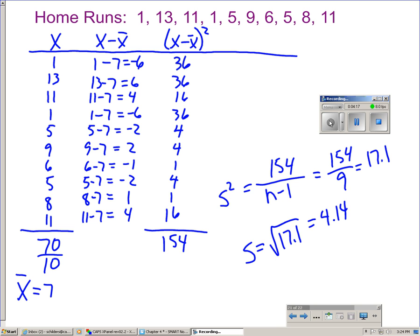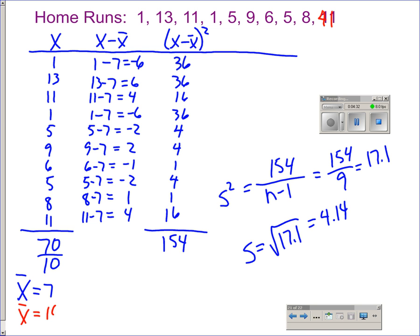What would happen if this last value in our data set were 41 instead of 11? Well, if that value were 41, then it would make our total much more, and our mean would end up being 10 instead. As you can see, the mean is not resistant to outliers. If we did all our calculations over again with 41 instead, our standard deviation with that outlier would be 11.57.